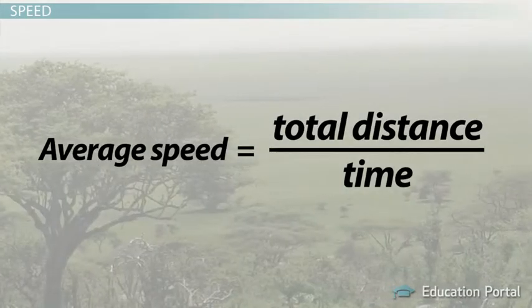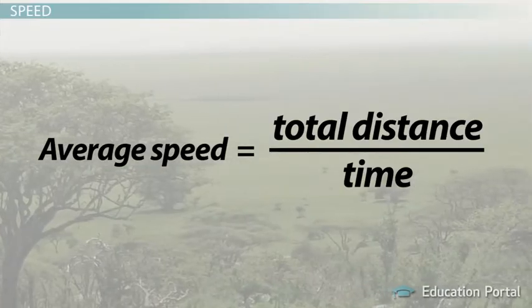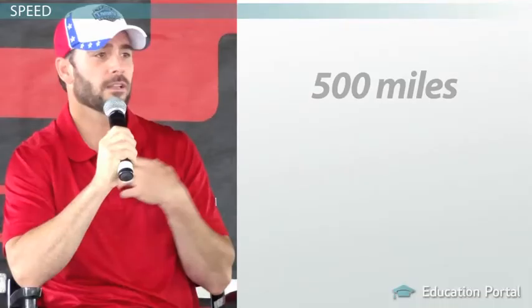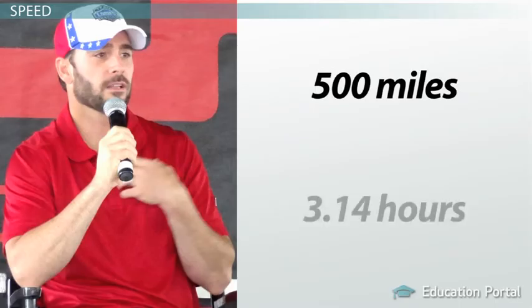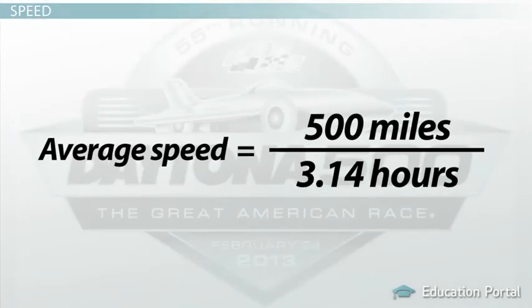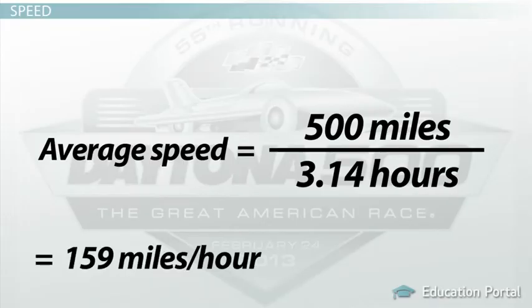So average speed equals total distance divided by time. If we know Jimmy Johnson drove 500 miles and it took 3.14 hours, we can calculate his average speed. His average speed is 500 miles divided by 3.14 hours, which equals 159 miles per hour.